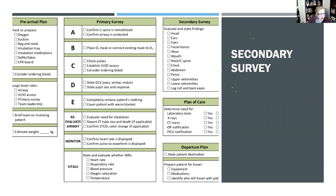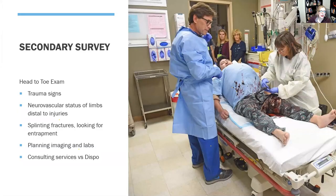The secondary survey is also algorithmic — it goes from head to toe and you check off findings as you go. You look at the head, feel around, look in the ears and eyes, feel the facial bones, and so on. The secondary survey covers neurovascular status of limbs, splinting, entrapment, imaging and labs, and what consults you need. Notice that the tourniquet is being removed so you can evaluate whether the injury needs laceration repair or is an arterial or venous bleed.